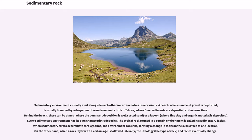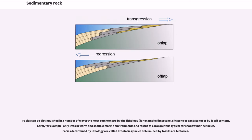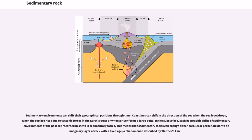Sedimentary environments usually exist alongside each other in certain natural successions. A beach where sand and gravel is deposited is usually bounded by a deeper marine environment offshore, where finer sediments are deposited at the same time. Every sedimentary environment has its own characteristic deposits. The typical rock formed in a certain environment is called its sedimentary facies. Facies can be distinguished in a number of ways, the most common are by lithology or by fossil content. Facies determined by lithology are called lithofacies; facies determined by fossils are biofacies.